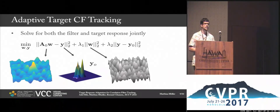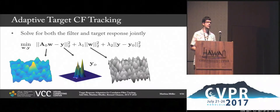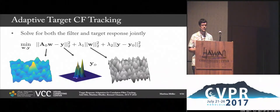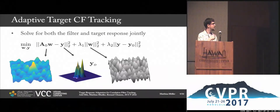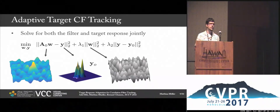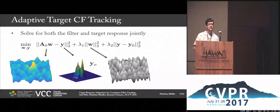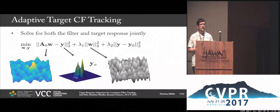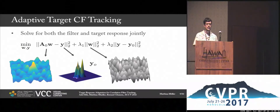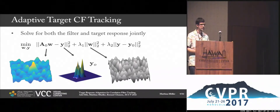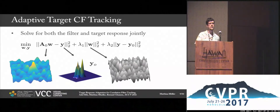There is some related work — a framework proposed at last ECCV. The idea is that since the target response Y is assumed to be a Gaussian, that's obviously not perfect, because there are situations like fast motion and motion blur where this assumption does not hold. The idea was to solve this problem jointly for the filter and the target response by sampling a few real patches and adjusting Y accordingly, which can be seen as adding a second regularizer Y minus Y0.